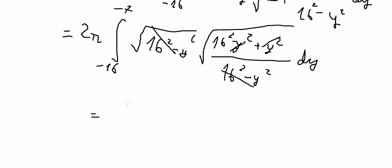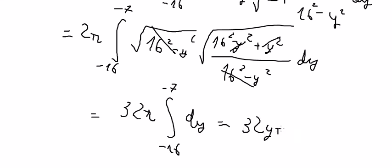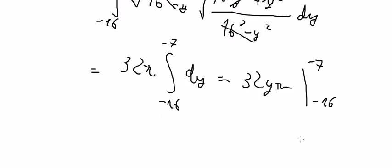So you got 32 times the integral from negative 16 to negative 7 dy, and we just evaluate this.